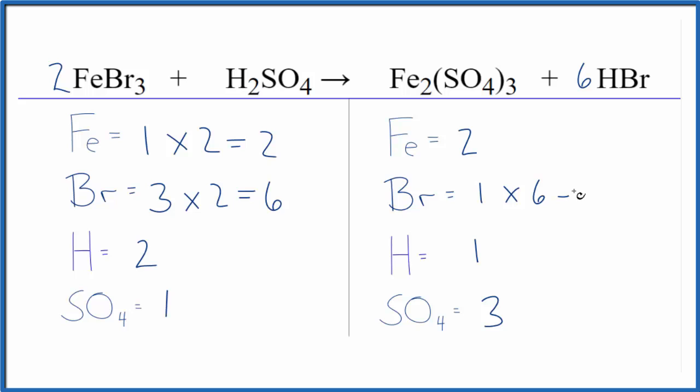And one hydrogen times six—now we have six hydrogen atoms. Why don't we put a 3 in front of sulfuric acid? Two times three gives us six, and our one sulfate times three gives us three sulfate ions. And we're done, this equation is balanced.